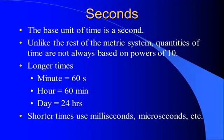The base unit of time is a second, so you're pretty familiar with this. But unlike the rest of the metric system, quantities of time are not always based on powers of 10. For example, longer times: one minute is 60 seconds, an hour is 60 minutes, a day is 24 hours, a year is 365 and a quarter days, and so on. But when we go to smaller units than a second, we go back to powers of 10 — things like milliseconds, a one-thousandth of a second, or microseconds, a millionth of a second, and so on.